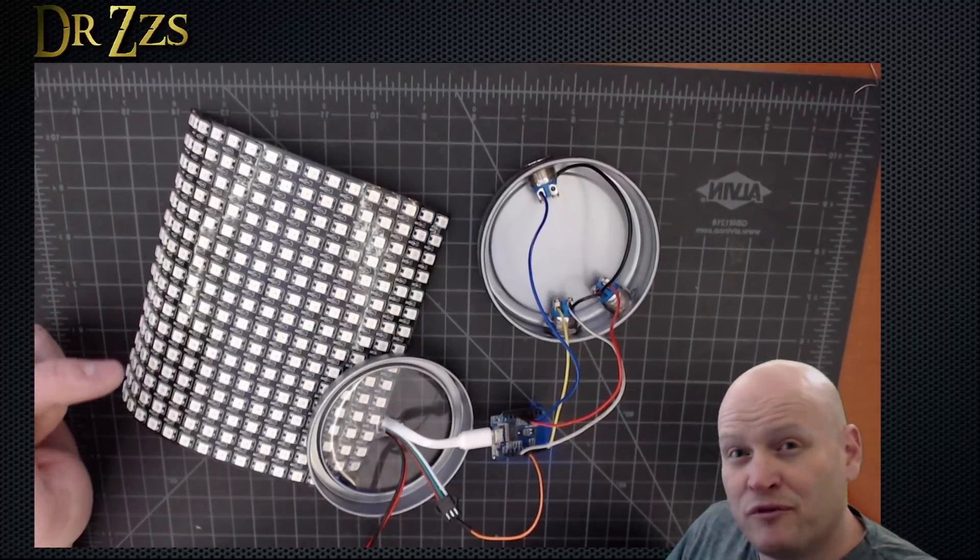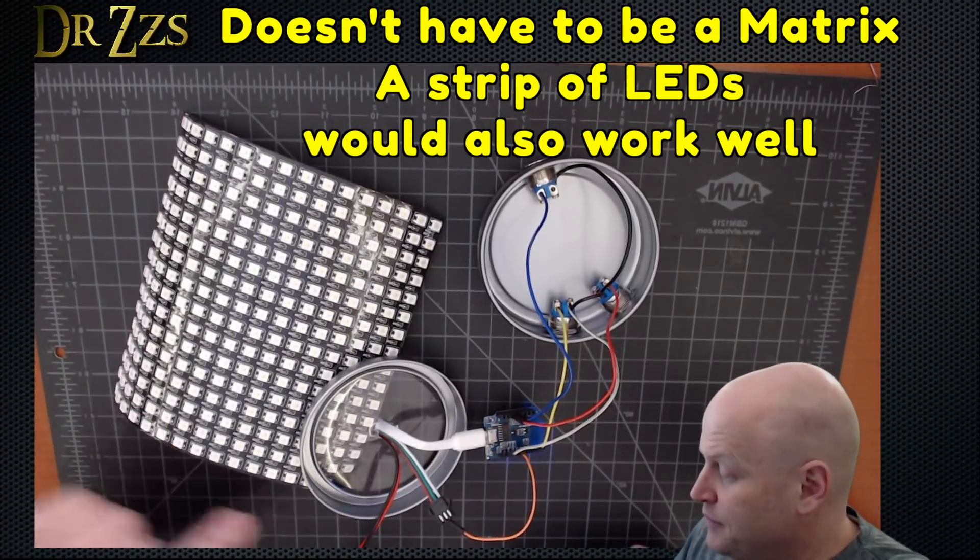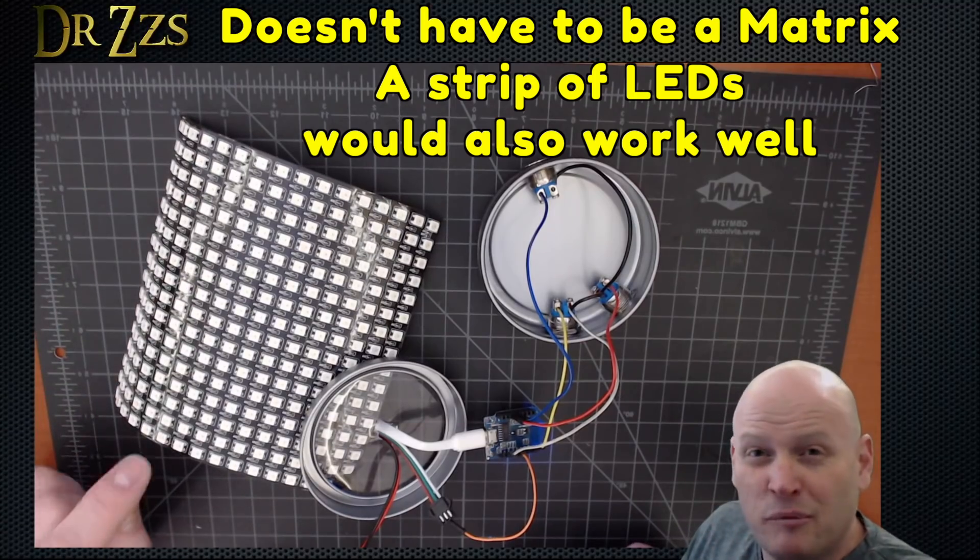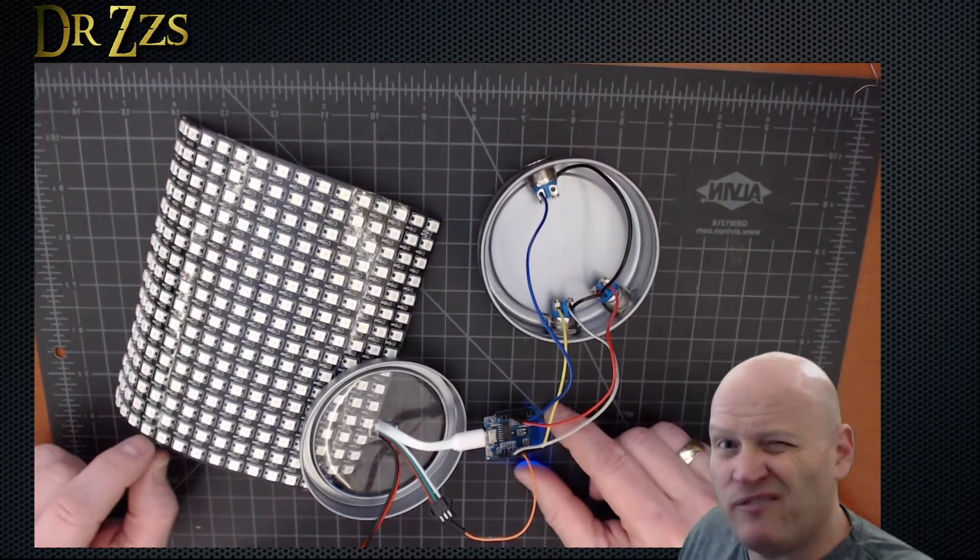These are the parts for my dream light. LED matrix, 16x16, WS2812 LEDs, 5V.